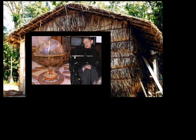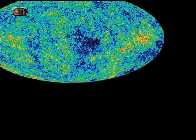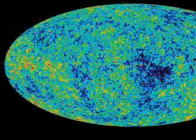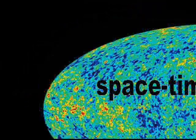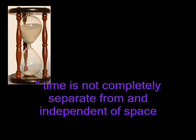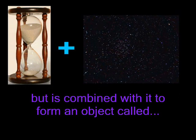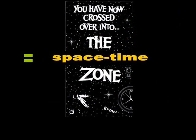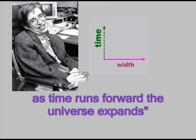Hawking also claims that he lives within a sphere known as space-time, asserting that the sphere is four dimensional and that it is expanding. Time is not completely separate from and independent of space, but is combined with it to form an object called space-time. As time runs forward, the universe expands. Time runs forward? In which direction is that? For the purposes of science, time is an abstract concept and not a brick — it cannot and does not form a malleable balloon with space.